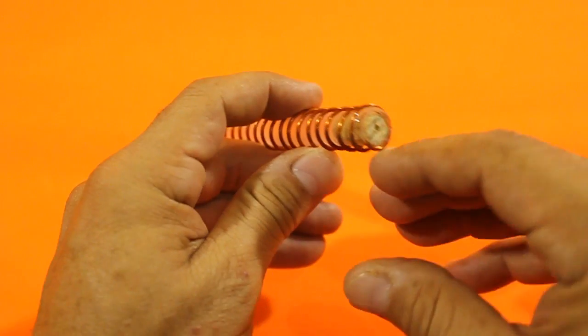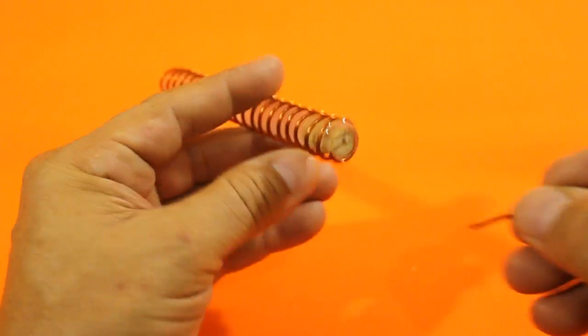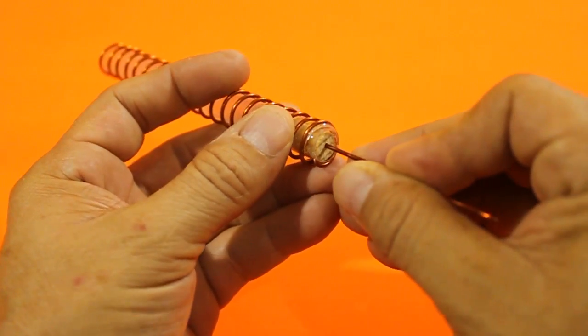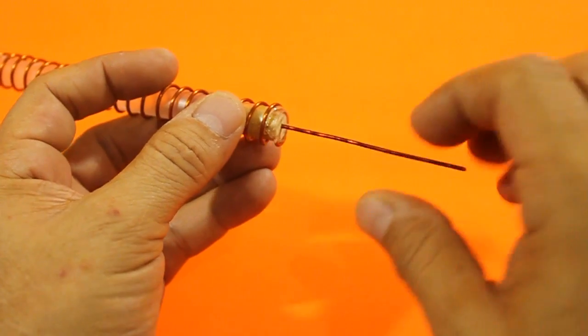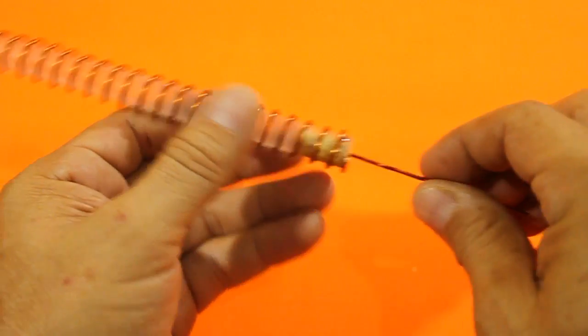On one end we have a piece of wood with a hole in the center where we will insert an axis, also made of copper wire, that will serve to couple the electric motor.